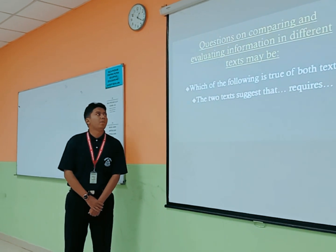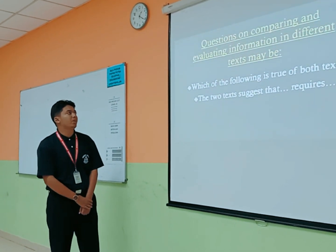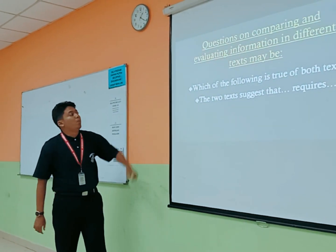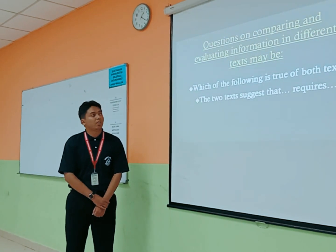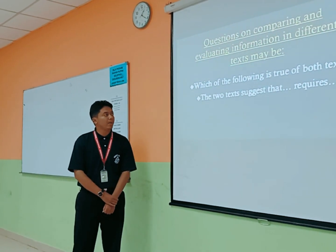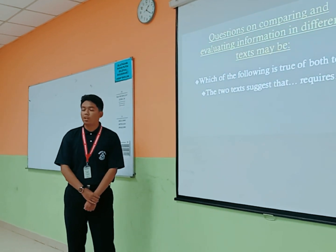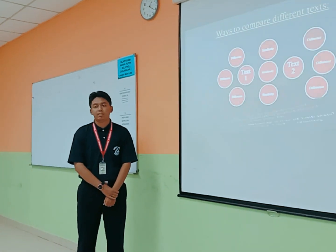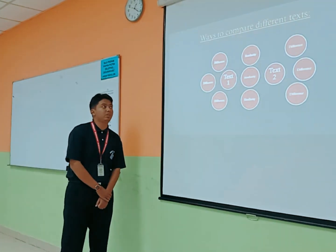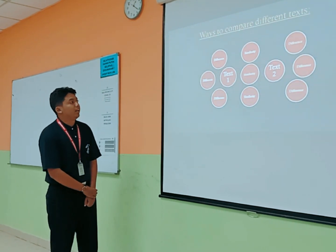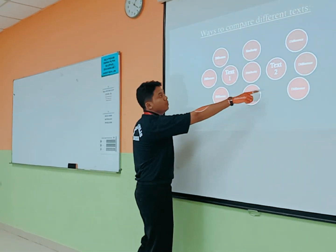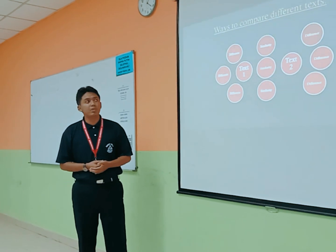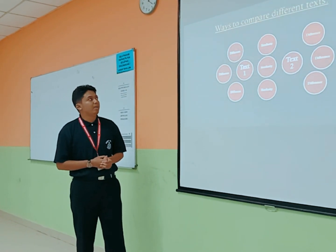Questions on comparing and evaluating information in different texts may look like this: 'Which of the following is true of both texts?' or 'The two texts target...' This is an example of how to display the texts — you need the two texts, like text one and text two, and the texts may have similarities and differences, so you can compare them.